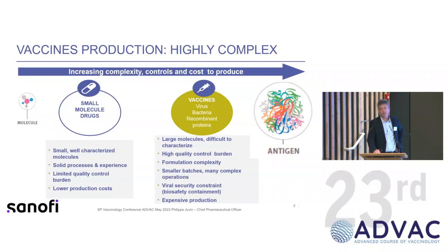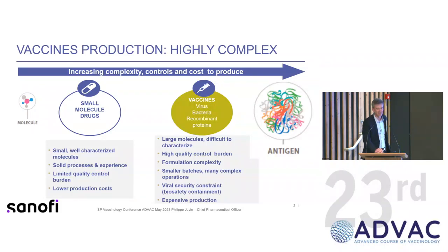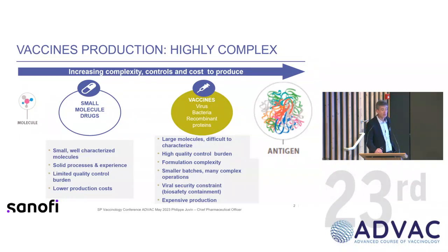As a consequence, they are much harder to manufacture, harder to characterize, difficult to formulate — this was mentioned again today. Of course, we are working on live organisms, so there is a need for containment to prevent spreading viruses or bacteria outside the factory. This has consequences on cycle time and on cost to produce vaccines.